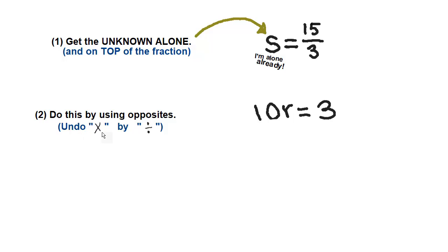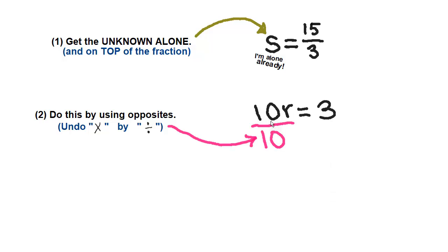You undo your opposites. If something's being multiplied, then you divide it. If it's being divided, then you multiply it. Here we see 10 times r. So to get rid of 10 times r, we have to do the opposite — what's the opposite of multiplying by 10? You have to divide by 10. This will undo the multiply by 10 and help us get rid of the 10.